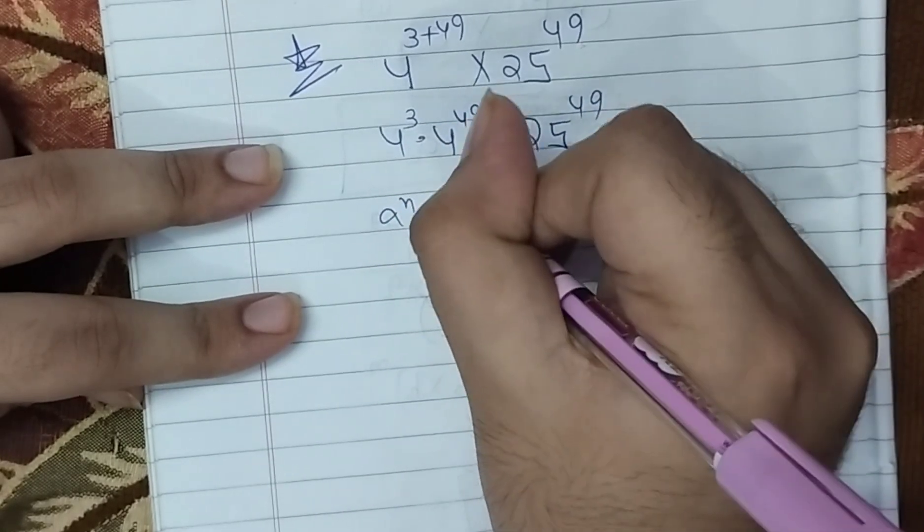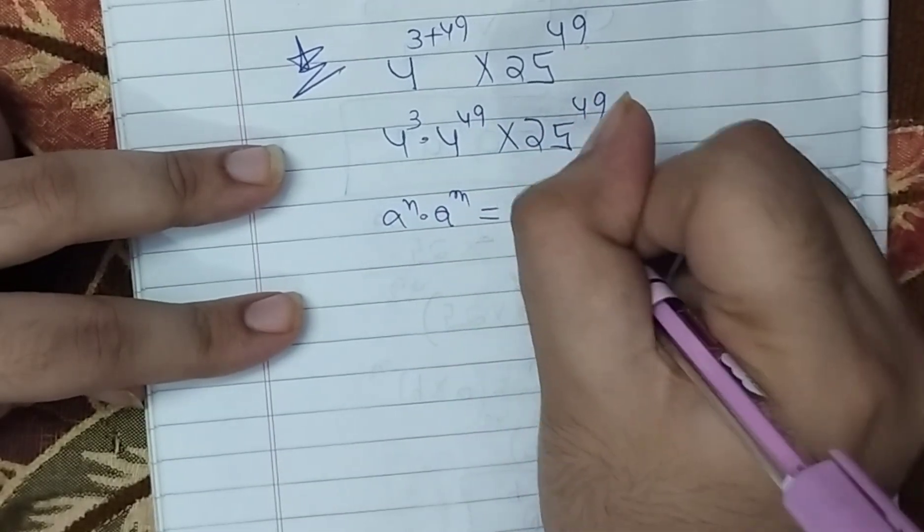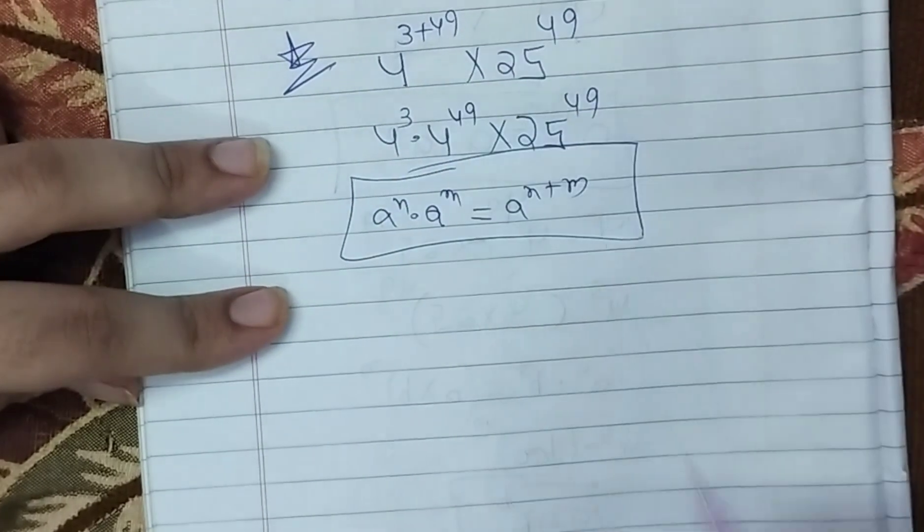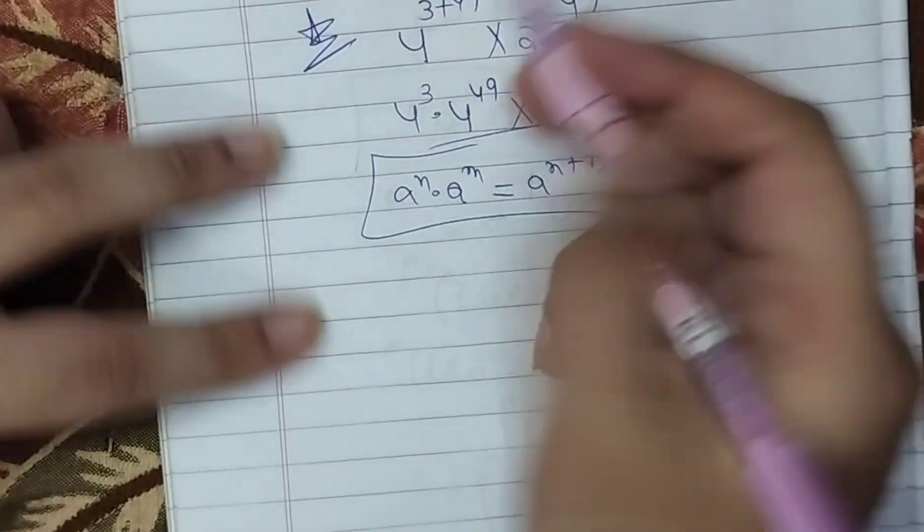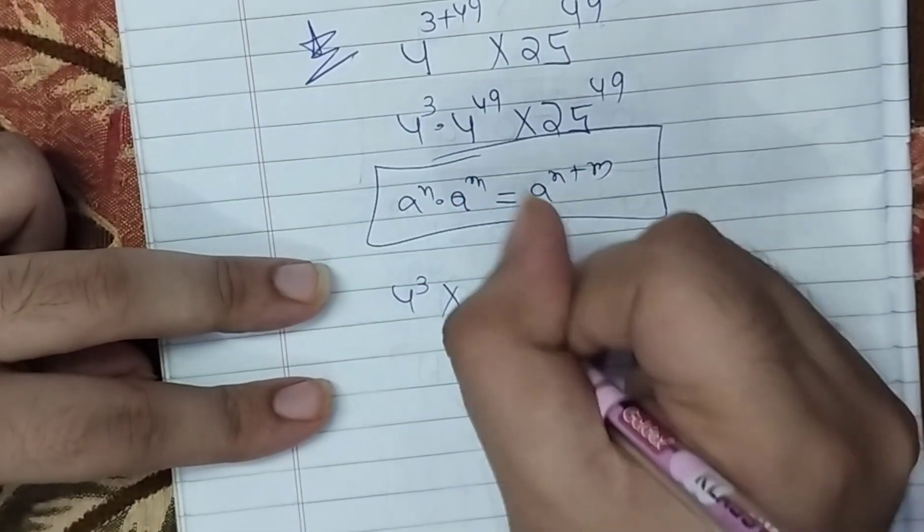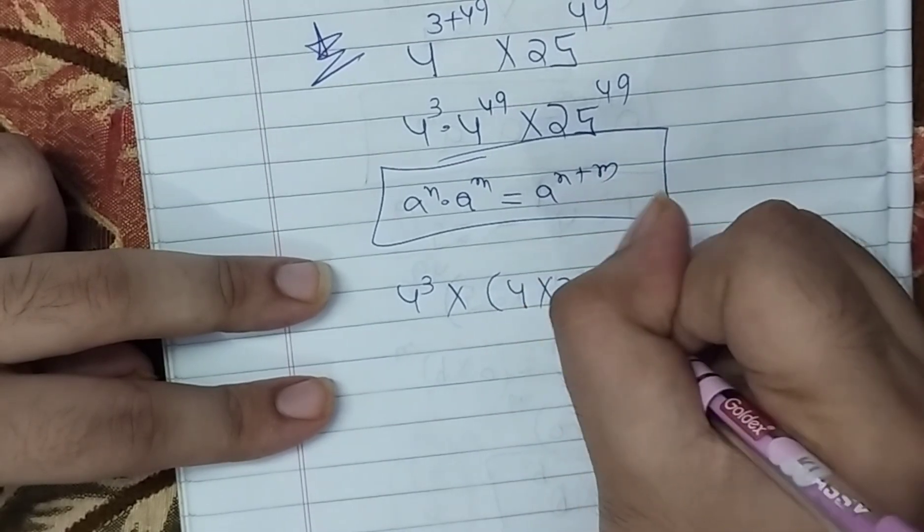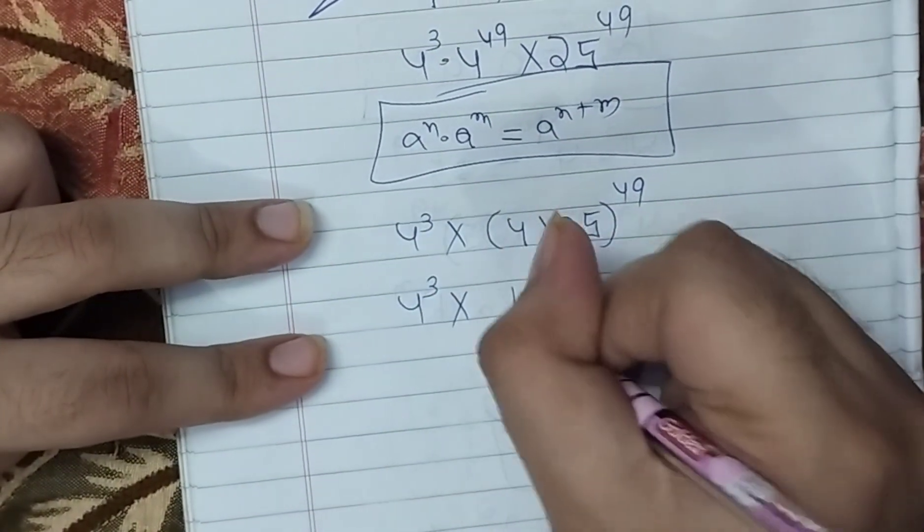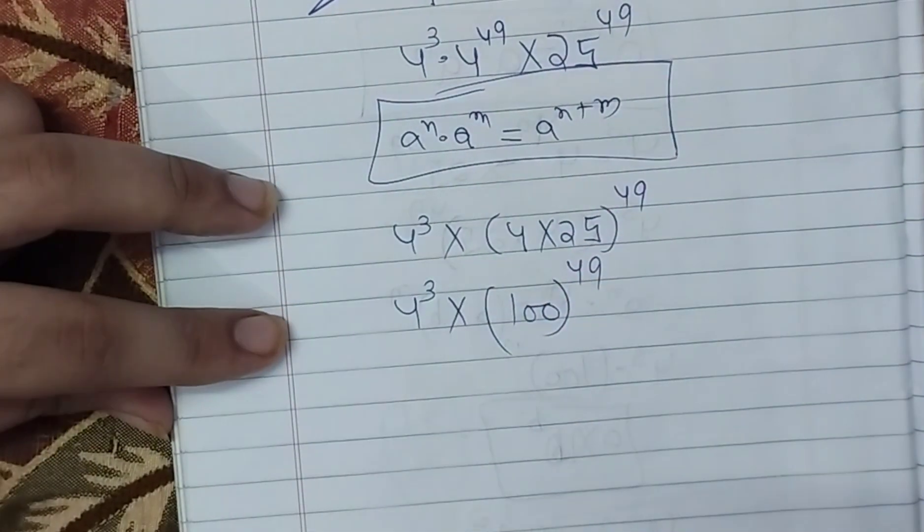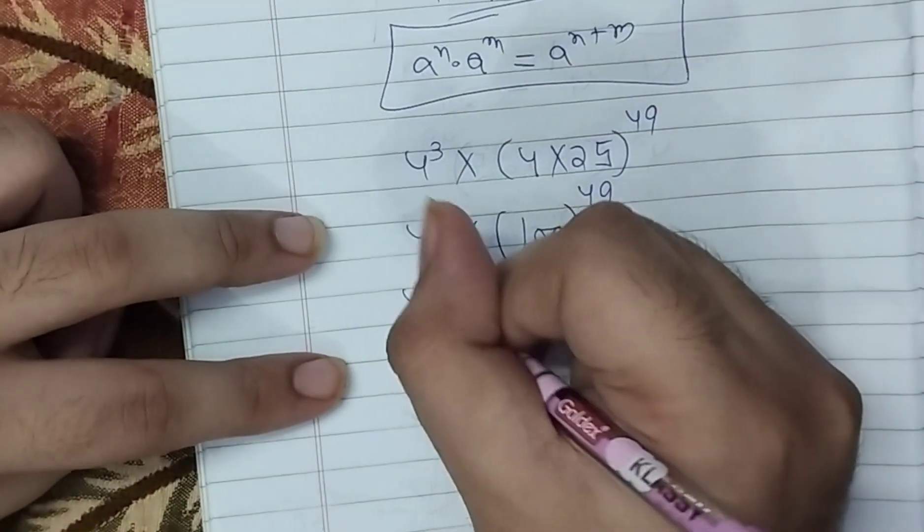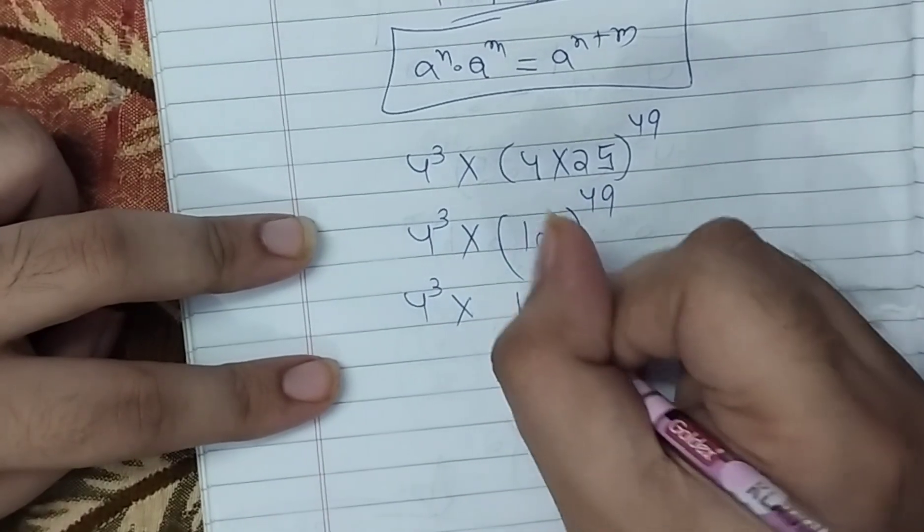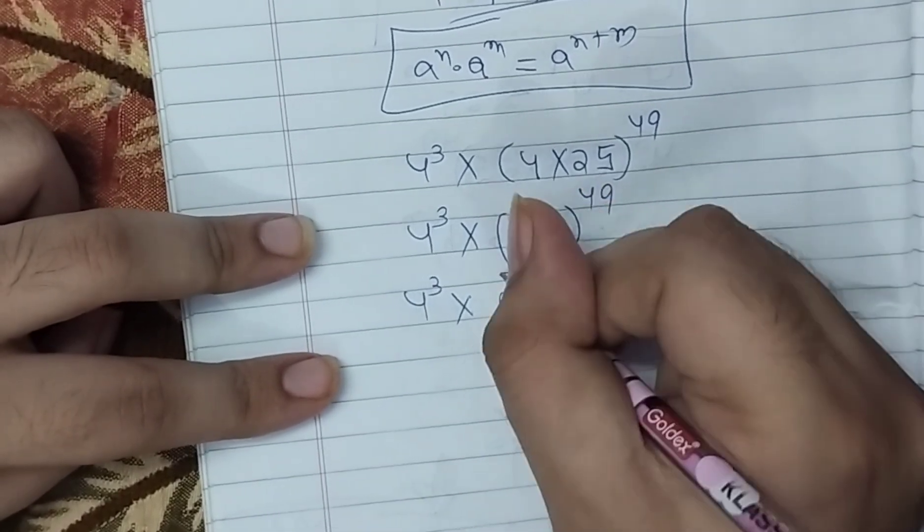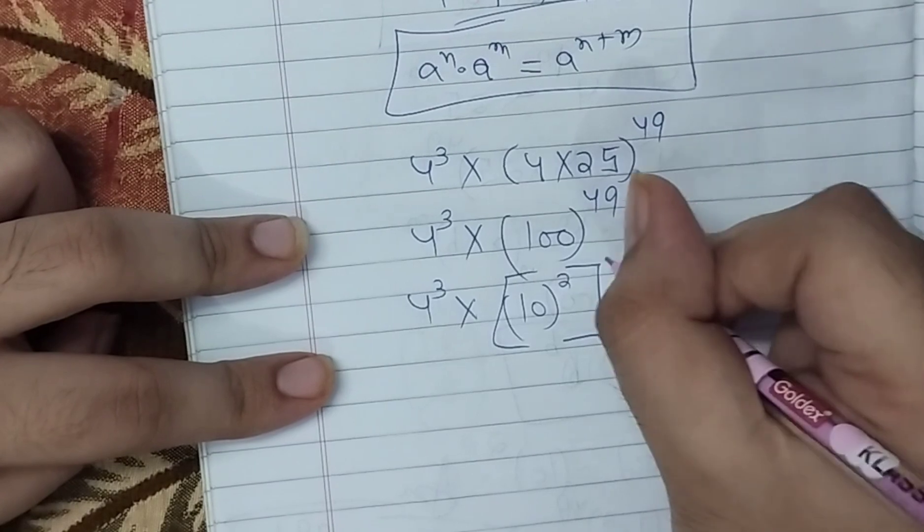a to the m bracket a to the n equals a to the m plus n. How do we multiply? We combine the powers. 4 to 49 and 25 to 49 become 10 to power 2 bracket 49.